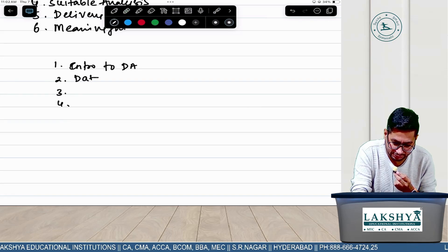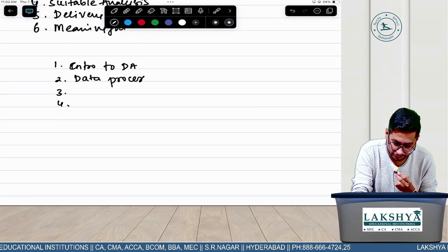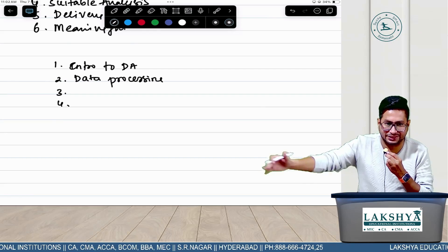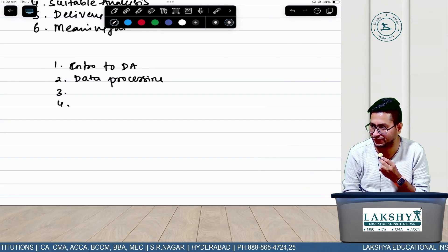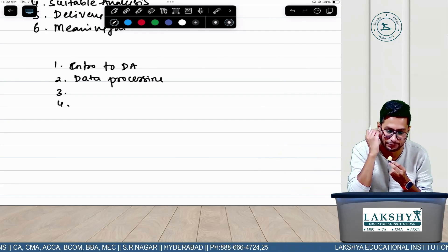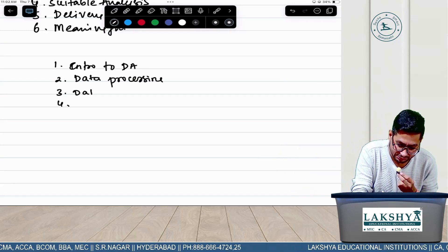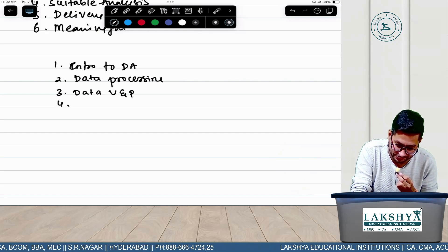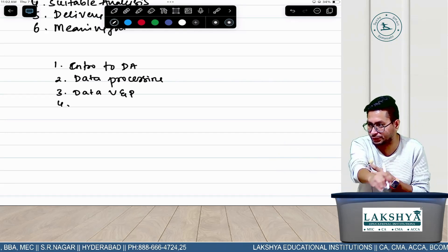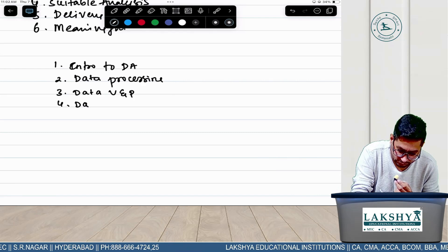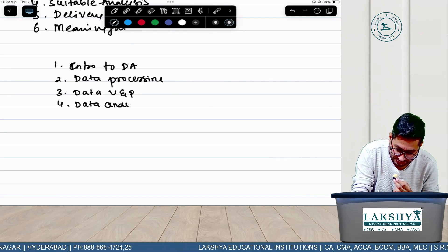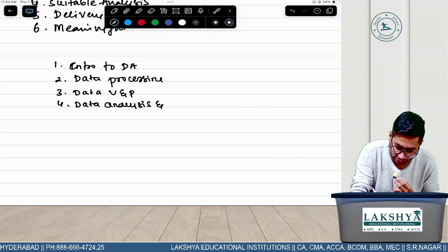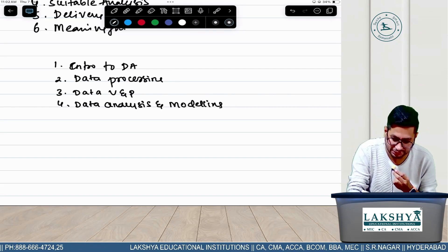Data processing, organizing, and validation - we have cleaning and validation as one chapter. Chapter 3 is Data Visualization and Presentation, and the fourth chapter is Data Analysis and Modeling.